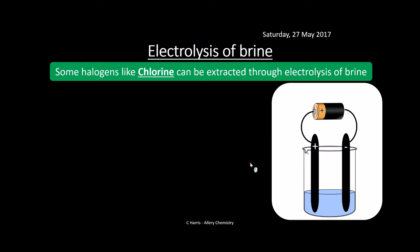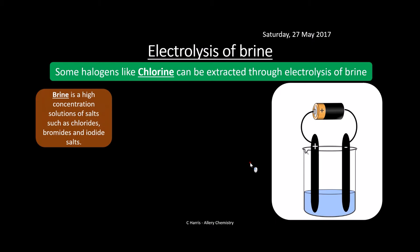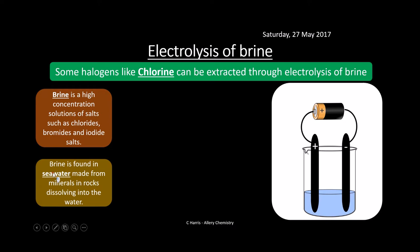Some halogens like chlorine can be extracted through electrolysis of brine. Brine is a high-concentration solution of salts such as chlorides, bromides, and iodides, and can be obtained from seawater. The sea is salty because river courses dissolve minerals from rocks as they run down and into the sea, building up ions. We can extract halogens from these salts.